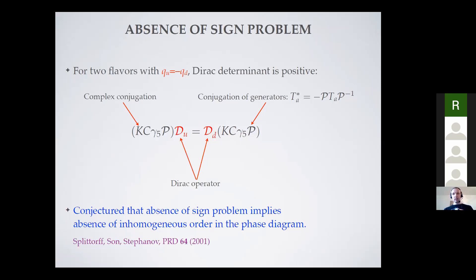For this choice of electric charges, the theories have a discrete charge conjugation symmetry which makes the determinants of the Dirac operator in the u and d quark sectors complex conjugates of each other, so the full theory has a positive determinant. There is another reason this is interesting: Splittorff and Stephanov conjectured in 2001 that there is a deeper connection between the sign problem and the presence of inhomogeneous phases — namely, that whenever a theory is free of the sign problem, translational invariance cannot be spontaneously broken.